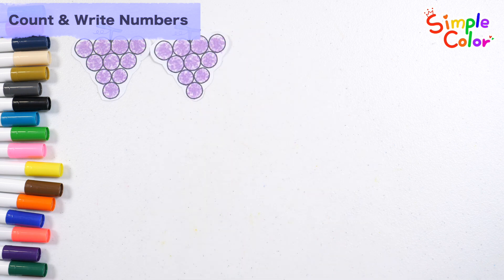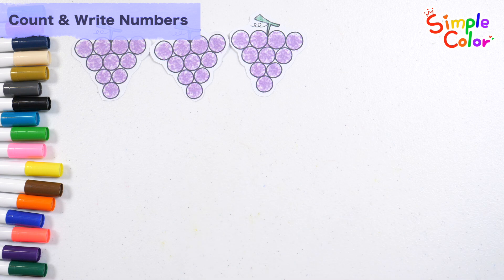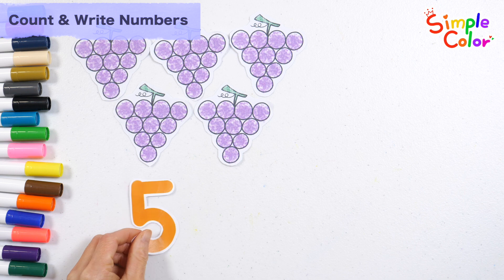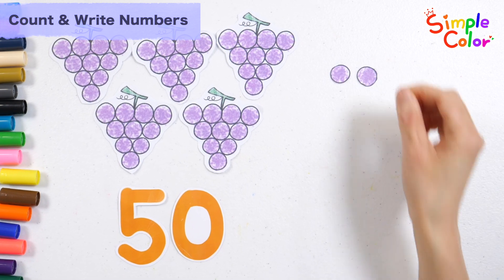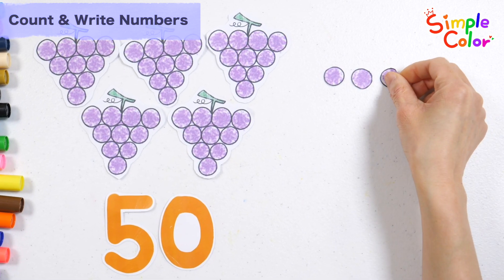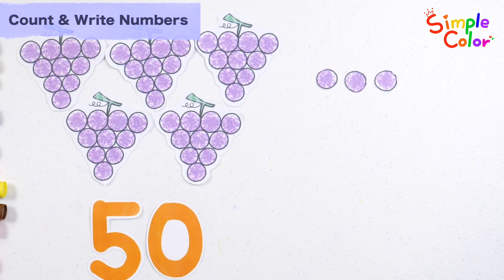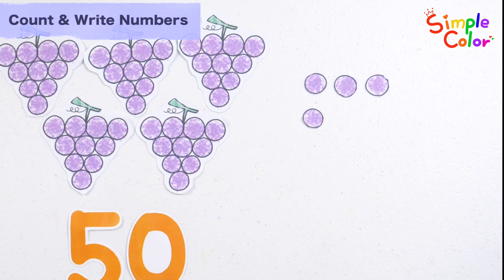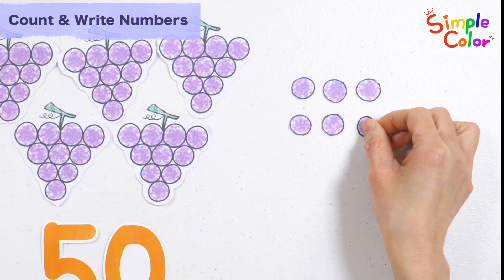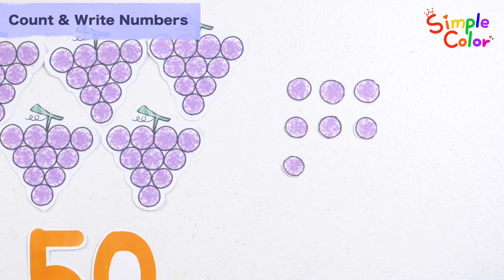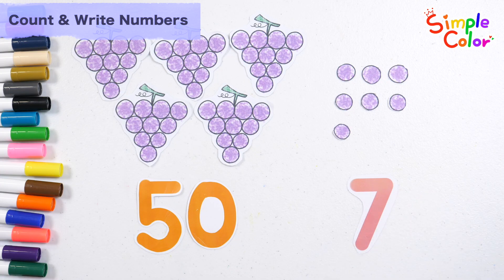Ten grapes, twenty, thirty, forty, fifty. A total of fifty grapes. One, two, three, four, five, six, seven. Seven grapes. All together, it's fifty-seven.